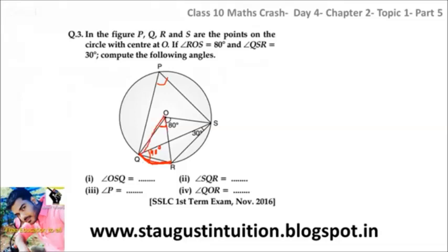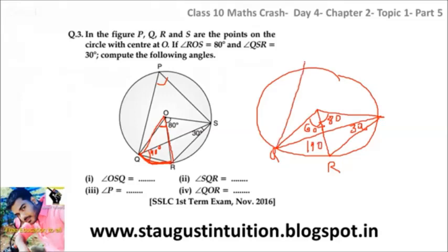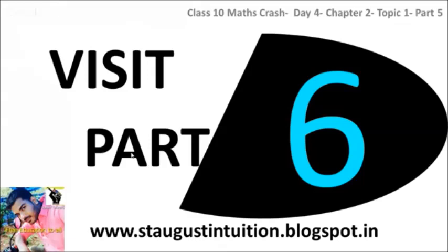This is the central angle. Around 30 degrees for arc QR — that is 60 degrees for the central angle. So angle P is equal to 70 degrees. And angle Q or angle QOR is 60 degrees. Thank you, please visit Part 6.